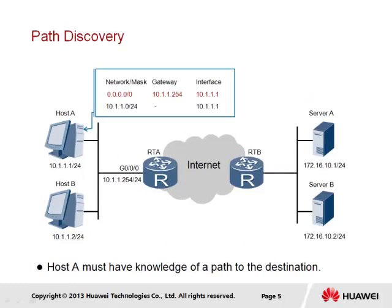Prior to the encapsulation or forwarding of data, it is necessary that the sender be aware of a path to the intended destination. Host A represents the sender, and data is intended to be forwarded to server A via RTA. An IP routing table exists within host A that lists all known networks, which currently comprises only the network to which it is connected. In the table, the network 0.0.0.0 is stated and refers to any network, along with the path by which the data should be forwarded.